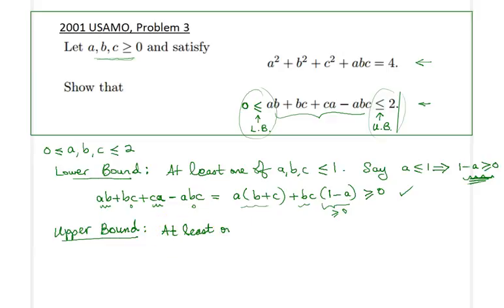What I would like to make now is another key critical observation. And it is the fact that at least two of a, b, and c are greater than or equal to 1 or less than or equal to 1.